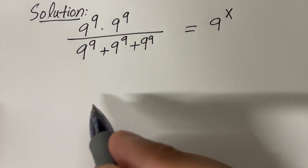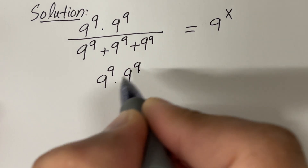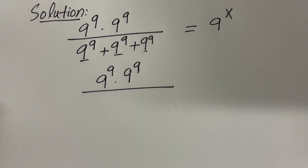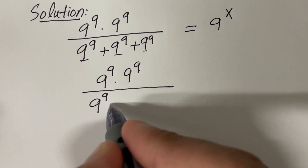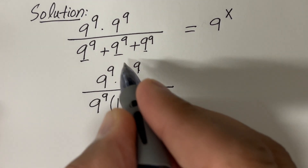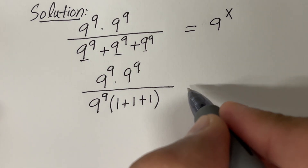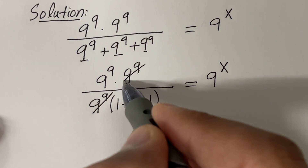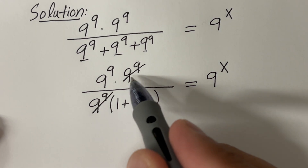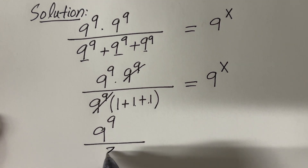Now let's simplify the left-hand side. First of all, let me rewrite the numerator as it is. If you look here, we have 9 raised to the power 9 common in each of these three terms in the denominator. So let's pull out 9 raised to the power 9. Then we will have 1 in each term, and 1 plus 1 plus 1 is just 3. So the left-hand side becomes 9 raised to the power 9 divided by 3.